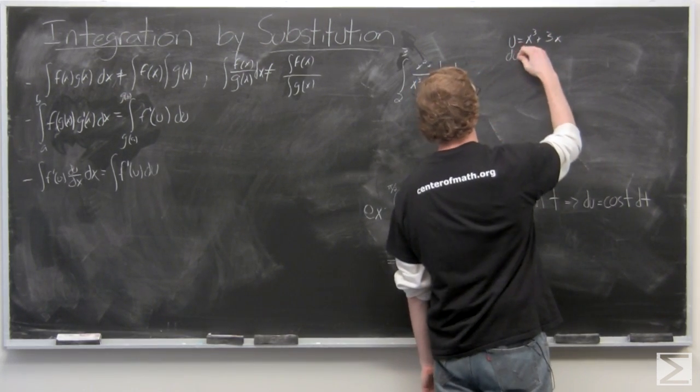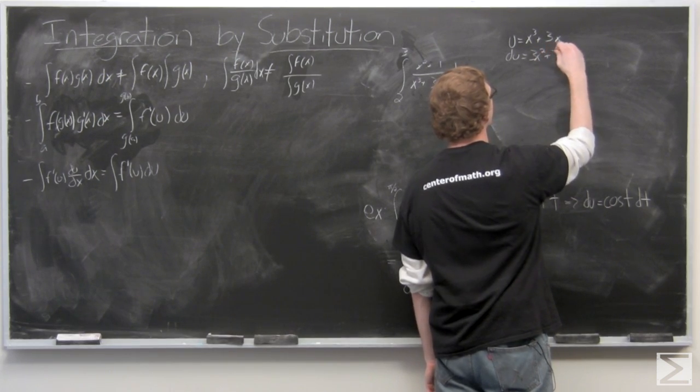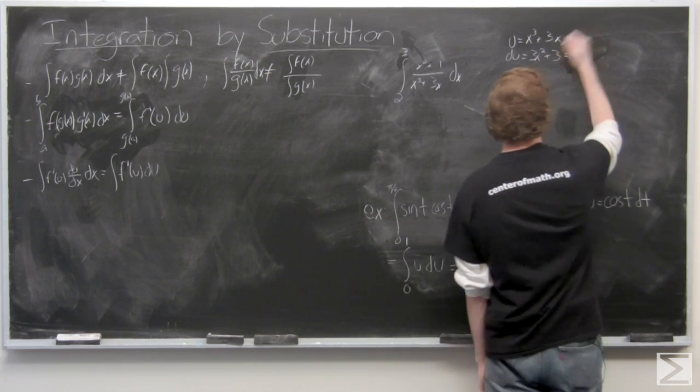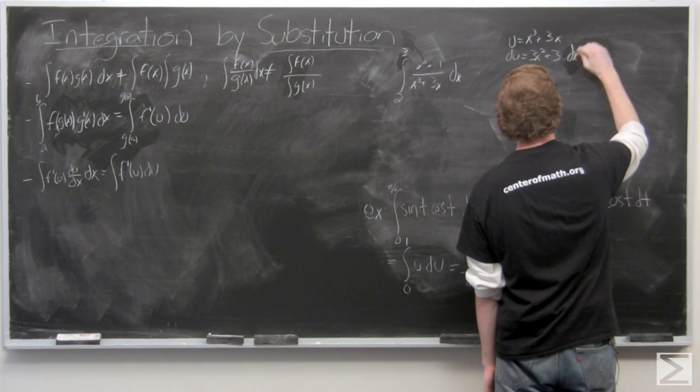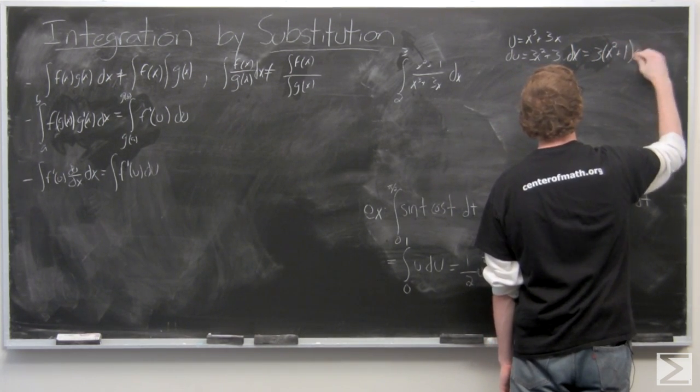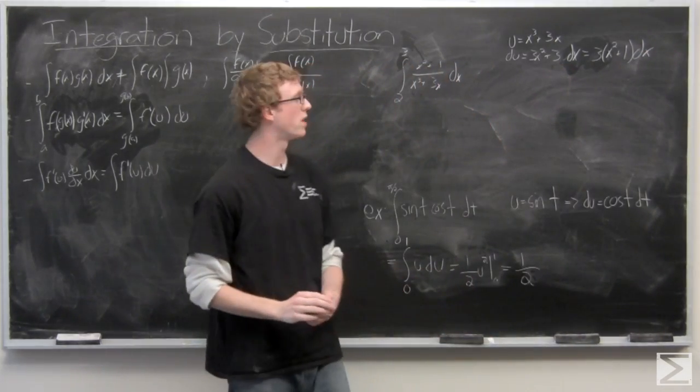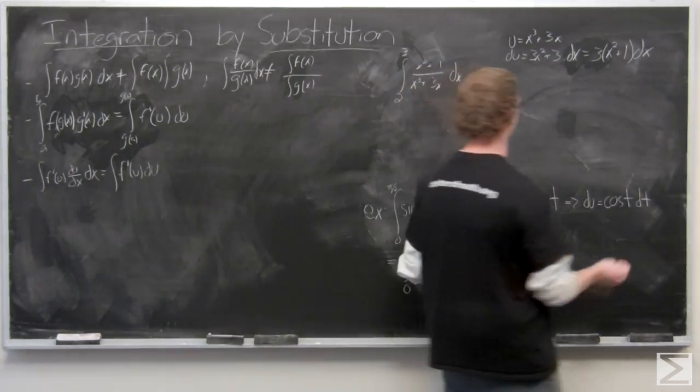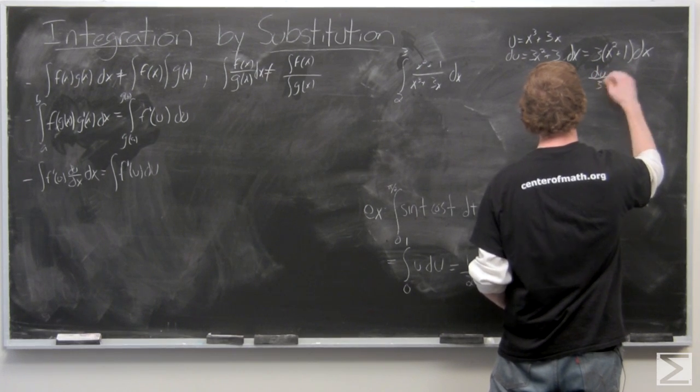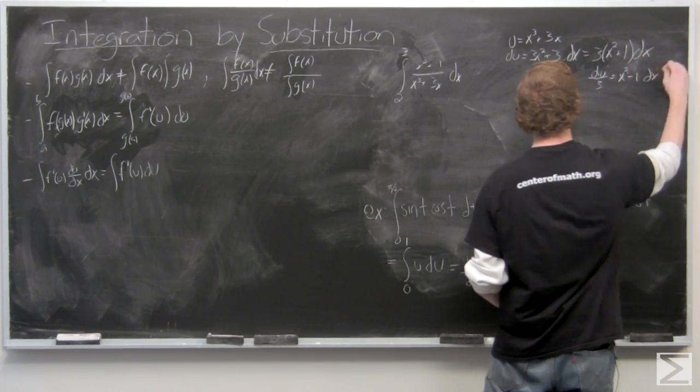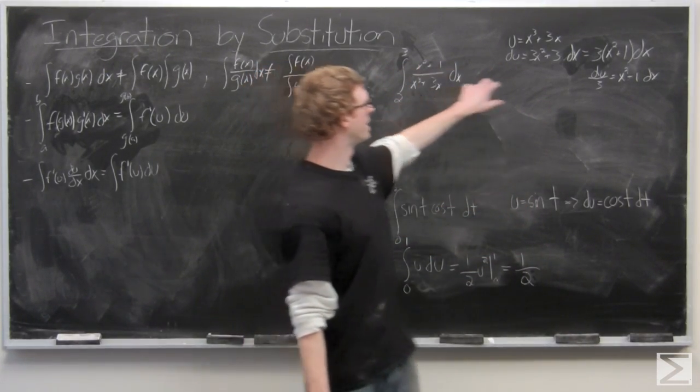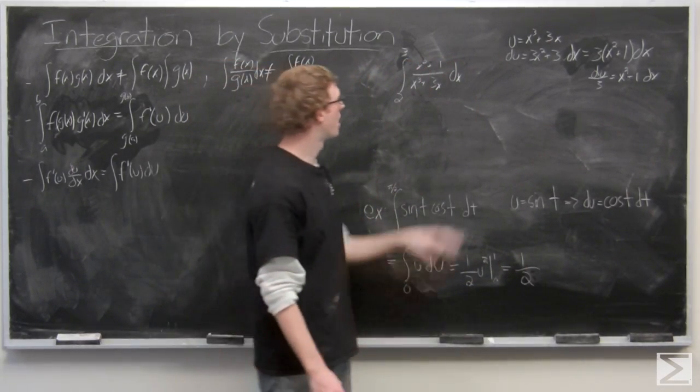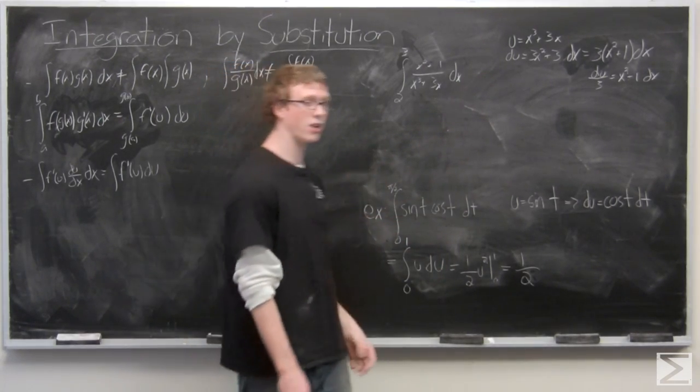And differentiate. And factor. So, it's not quite what we want, but we can actually do a little division here and find that du over 3 equals x squared plus 1 dx. And now, we have what's on top, x squared plus 1 dx, x squared plus 1 dx equals du over 3. And we have just a u on the bottom. Don't forget that we need to change our bounds of integration, which we'll take care of in just one second.